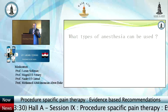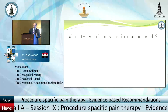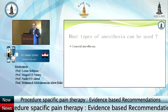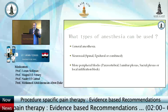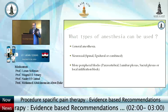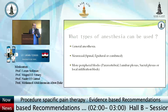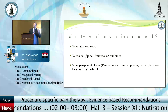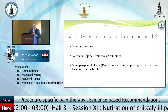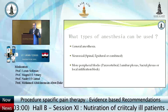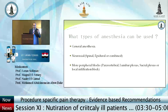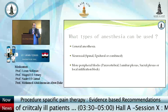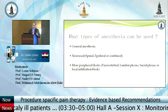What types of anesthesia can we use for hip replacement surgery? We have general anesthesia, neuroaxial — spinal, epidural, or combined — and nowadays paravertebral, lumbar plexus, and sacral plexus blocks. Some papers have also discussed local infiltration blocks.